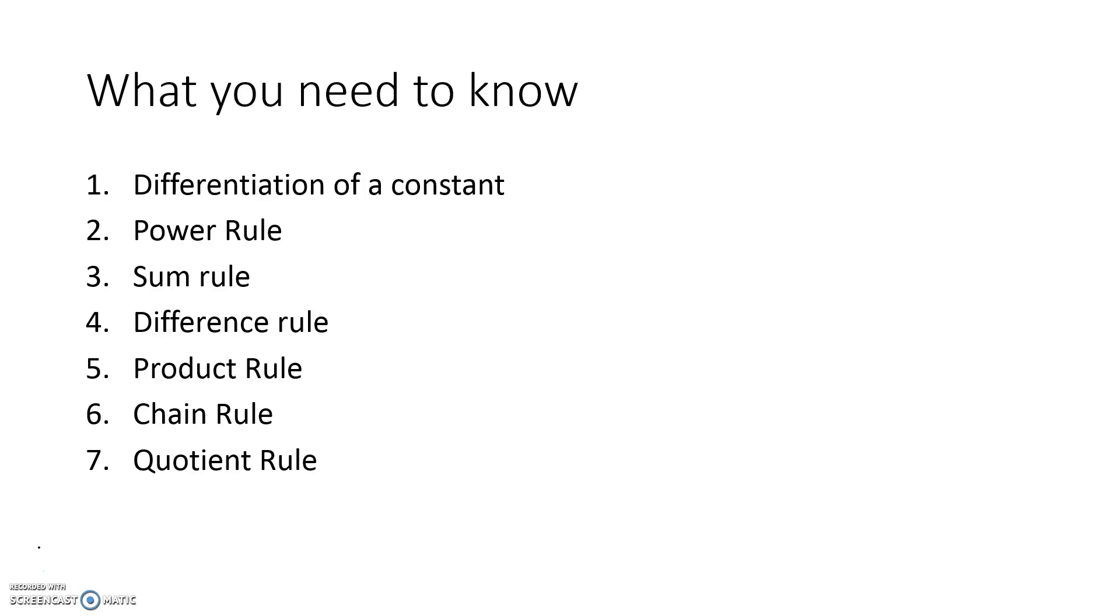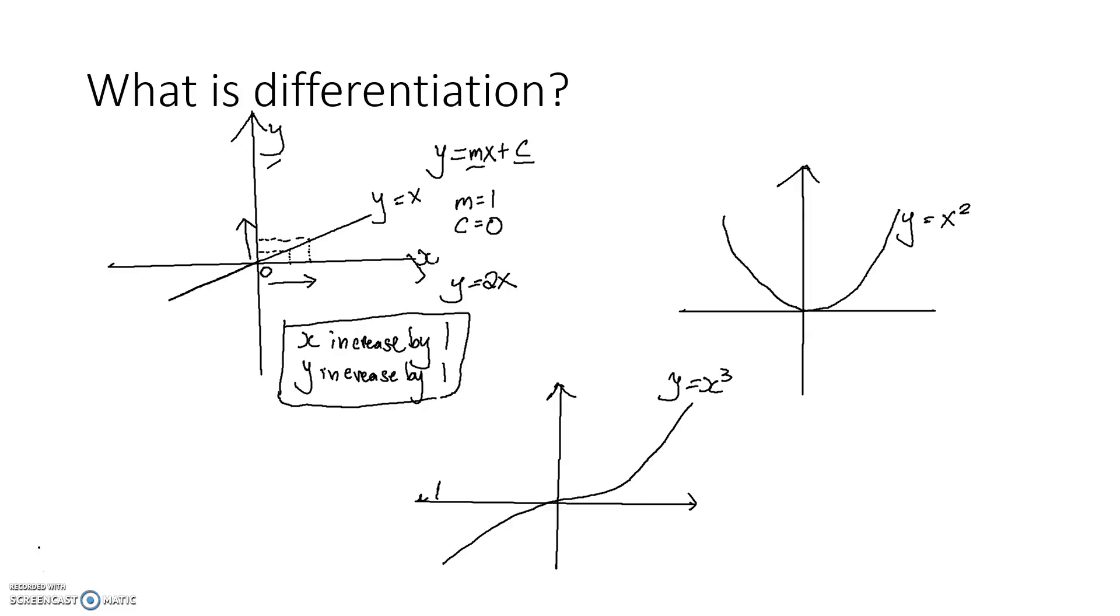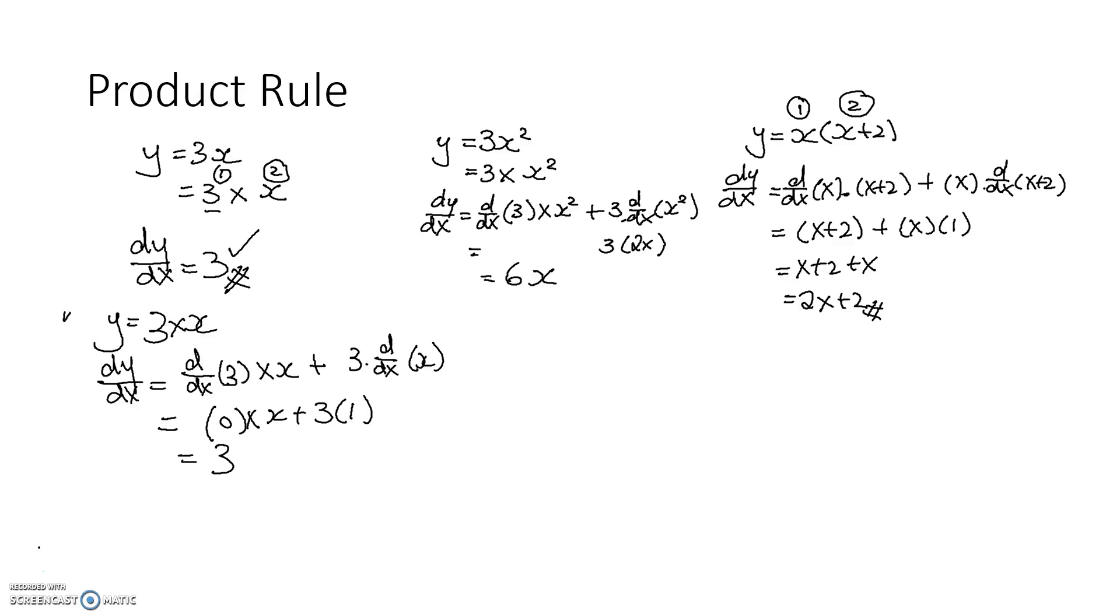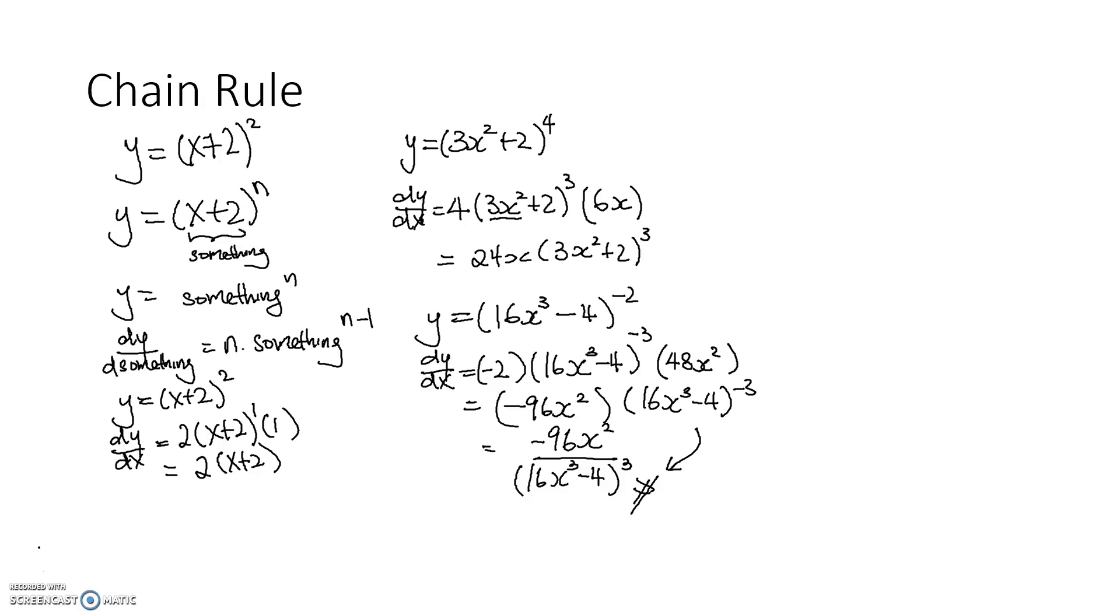What we have covered, we have done items 1 to 6. This video would basically look at the quotient rule. So what we have done, we have done what's differentiation, the differentiation of a constant, the power rule, the sum rule, the difference rule, the product rule and the chain rule. So all these were done in the two videos before this. If you just go on the right hand side under the playlist, I would have listed them as differentiation part 1 and part 2.